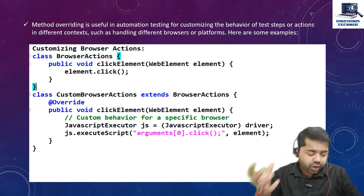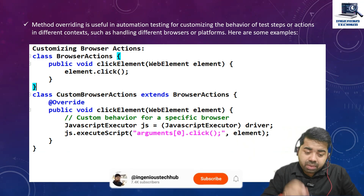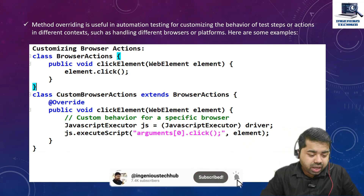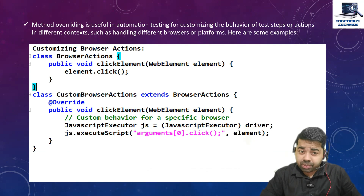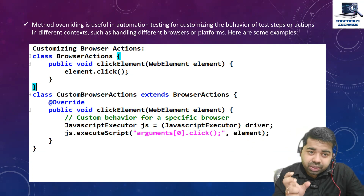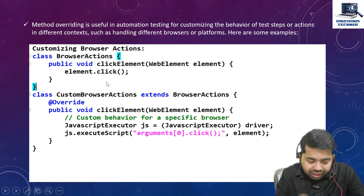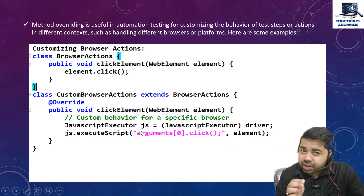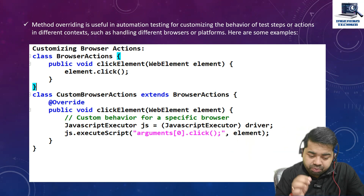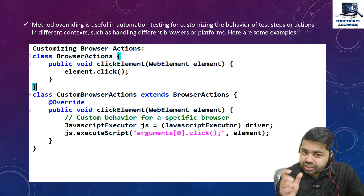For overriding, the method signature is the same but the implementation is different. For browser actions like click operations, sometimes a normal click does not work, so we can use JavaScript Executor. I created a method called clickElement — in one version we perform a normal click, and in the overriding version we use JavaScript Executor to click. This is useful for different browser scenarios.